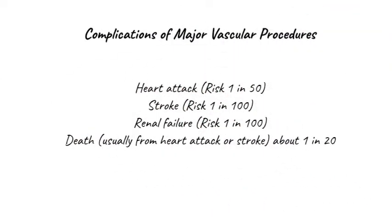Complications which may occur with any major vascular procedure include: after an open AAA repair there is a risk of a heart attack, which is about 1 in 50; a major disabling stroke, risk being about 1 in 100; renal failure requiring permanent dialysis, again a risk of about 1 in 100; and death, generally from a heart attack or a stroke, the risk being about 1 in 20.